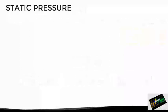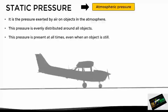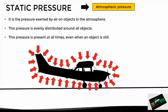Let's start with the static pressure. This is also known as the atmospheric pressure, and it is the pressure that the air exerts on the objects that are inside the atmosphere. This pressure is distributed evenly around all objects as we can see in this image, and we must also say that this pressure is present at all times, regardless of whether the object is stationary or moving.